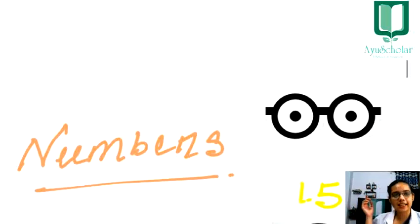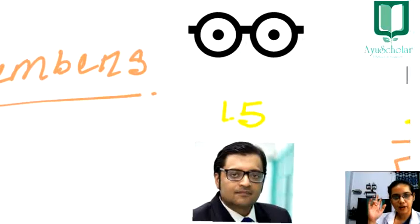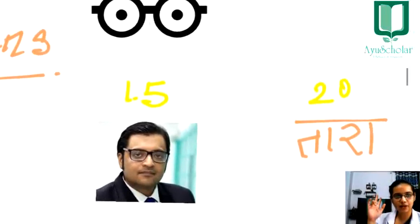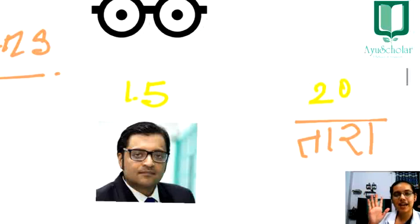An important section to cover here is: which acharya has described what number of Yantras, and how to remember that. So first, all of you know this person — he is Arnav Goswami. From 'Arnav' you will remember Ras Arnav. Arnav (Ras Arnav) has described 15 Yantras — remember, 15 Yantras.